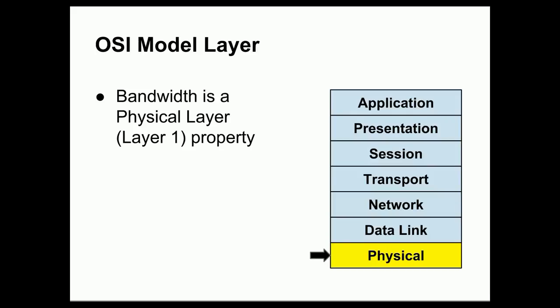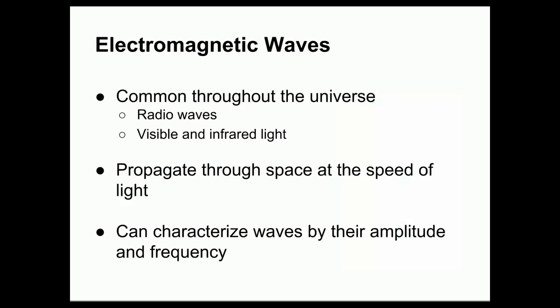The way that I'm going to define bandwidth is that it is a physical layer property. This is a property that exists at layer one of the OSI model. In order to begin discussing bandwidth, I first need to discuss electromagnetic waves.